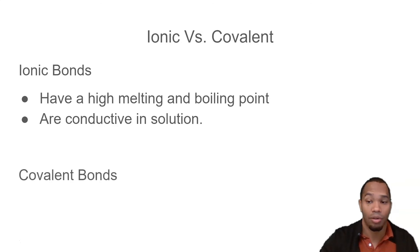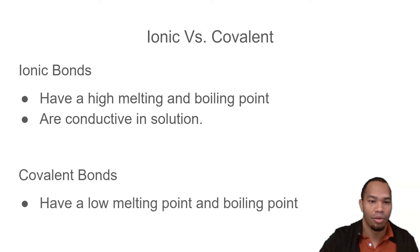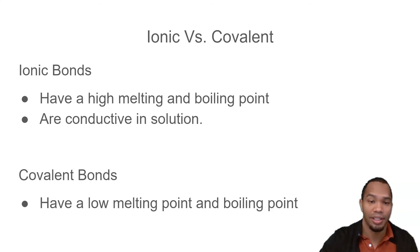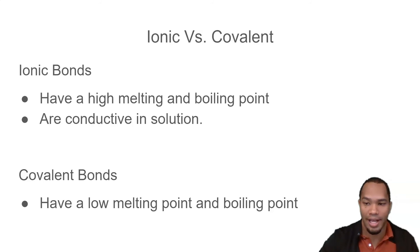Now the next thing: covalent bonds. Covalent bonds actually have a low melting point and a low boiling point. Think about what kind of elements bond using the covalent bond — these are typically non-metals. Non-metals, when you think about them, they are gases and other brittle substances.